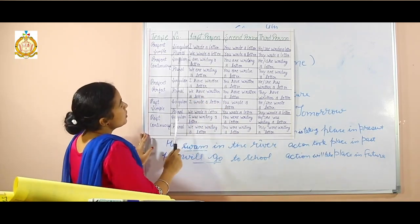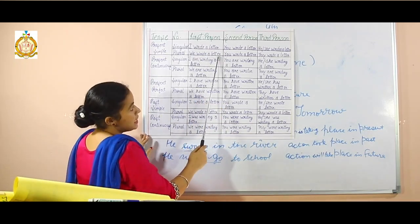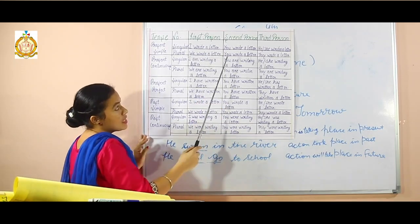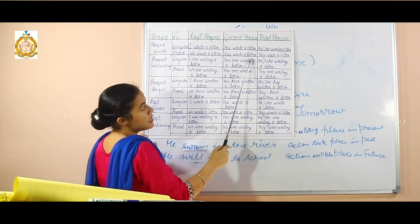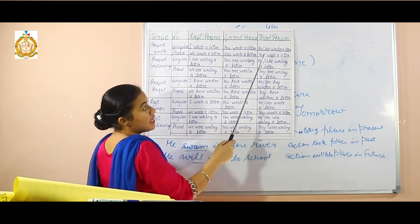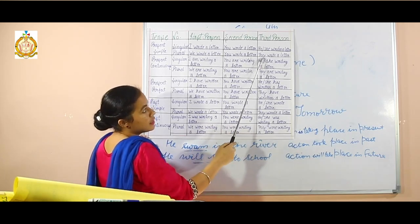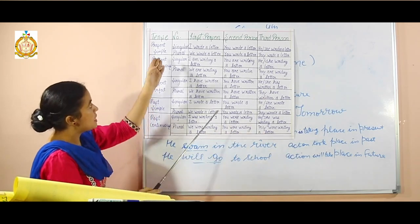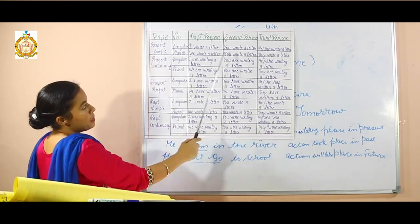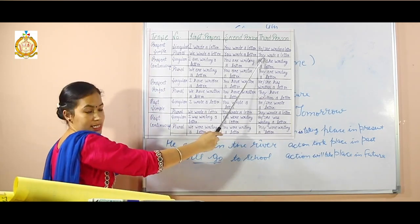In simple present tense: first person — 'I write a letter.' Second person — 'You write a letter.' Third person — 'They write a letter.' This is simple present tense.